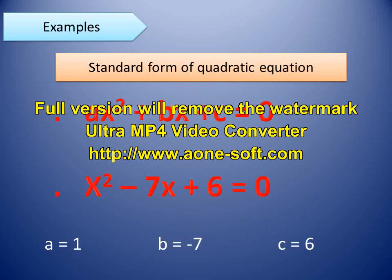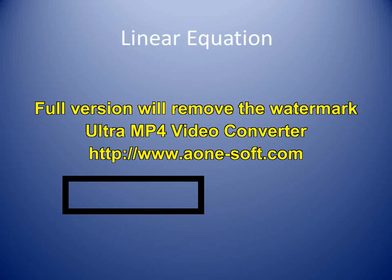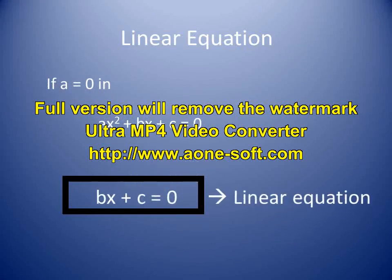Quadratic equations can be classified on the basis of the values of these real numbers. If we put the value a = 0 in the quadratic equation ax² + bx + c = 0, then we get the remaining equation as bx + c = 0, because the term with the highest power is eliminated. This gives us a linear equation.